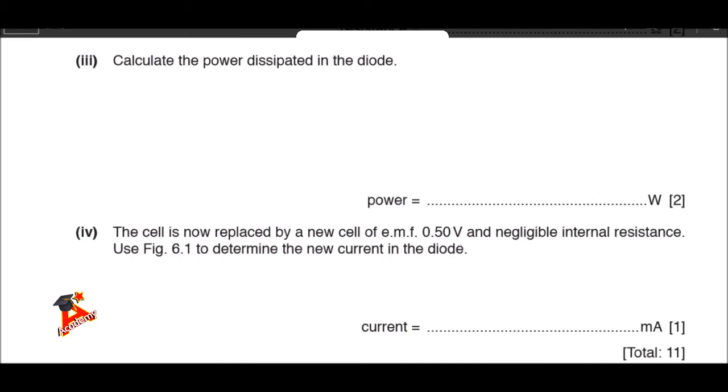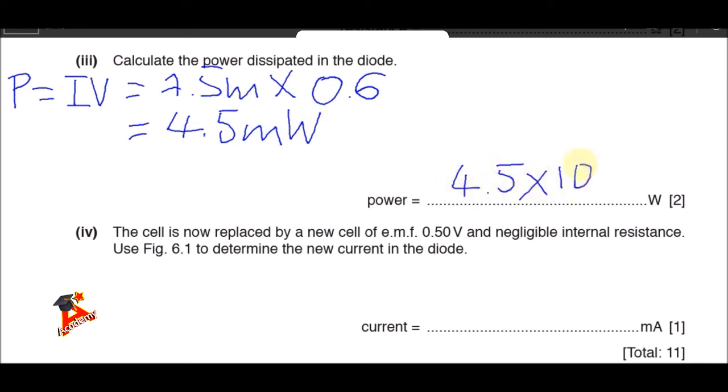The power dissipated in the diode can be obtained from this formula. Power is equal to IV. Now we have a current of 7.5 milliamps multiplied by a voltage of 0.6, the voltage through the diode. That gives us a power of 4.5 milliwatts.